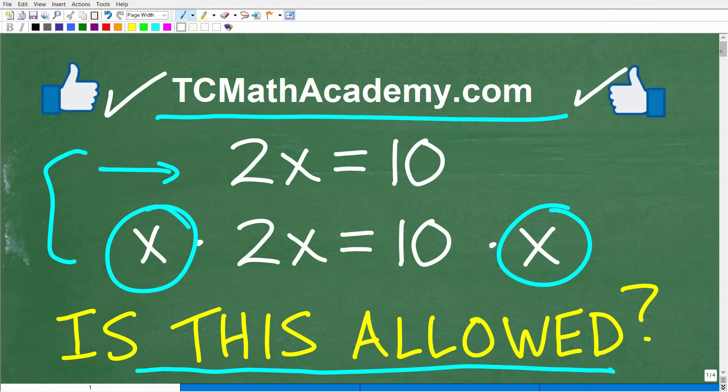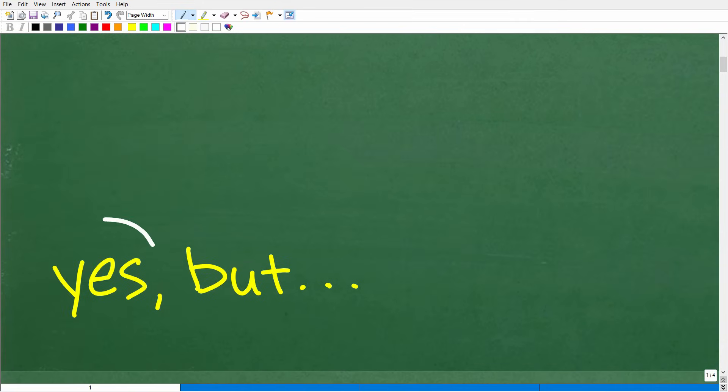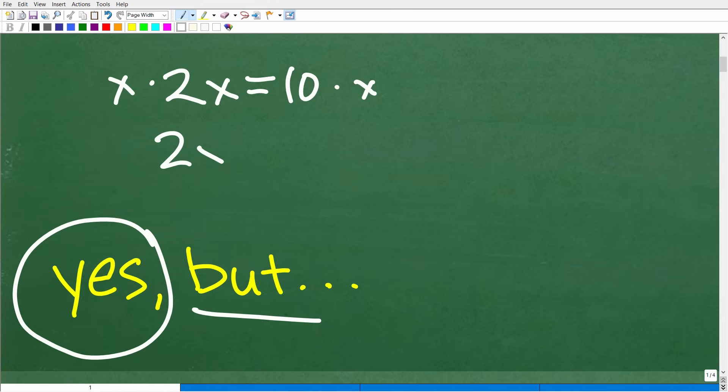Okay, so let's go ahead and take a look at the answer. We're gonna take 2X is equal to 10. We're gonna multiply both sides of the equation by X. What happens? Well, this indeed is allowed. Okay, yes, we can do this, but there's a twist. Okay, so here is our equation 2X is equal to 10. And then we're gonna multiply X by both sides of the equation. We're gonna end up with the new equation 2X squared is equal to 10X.